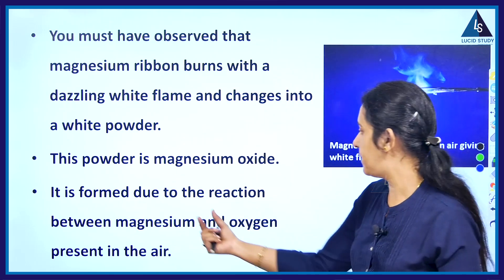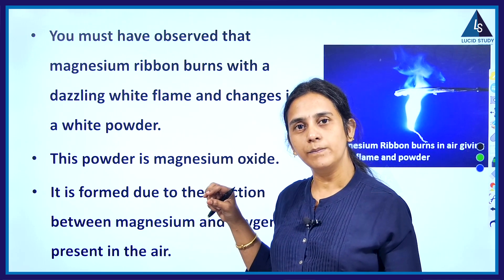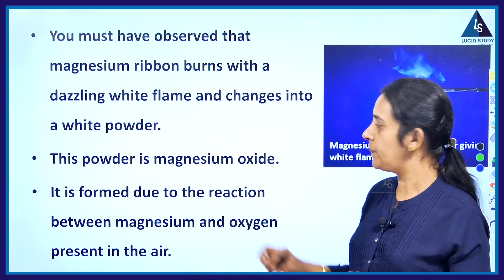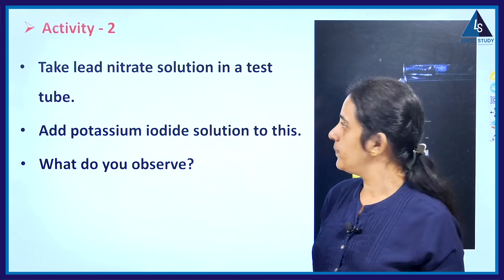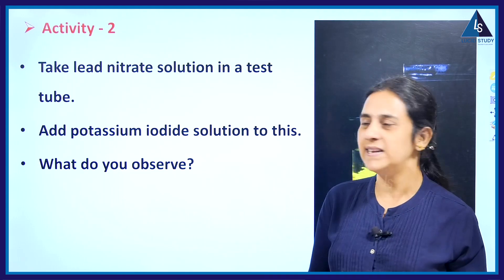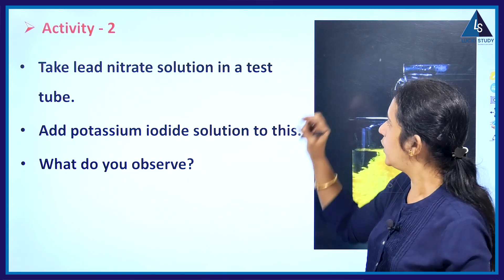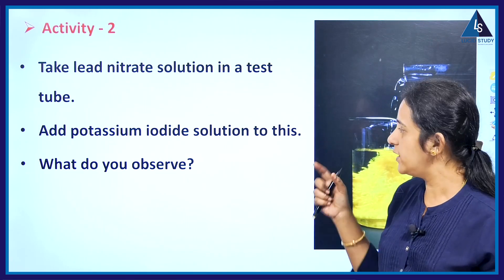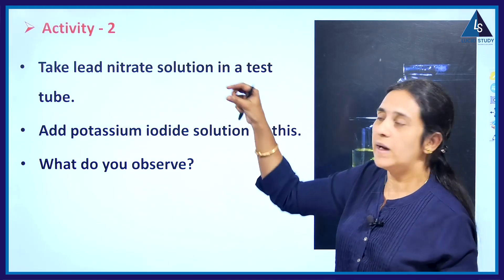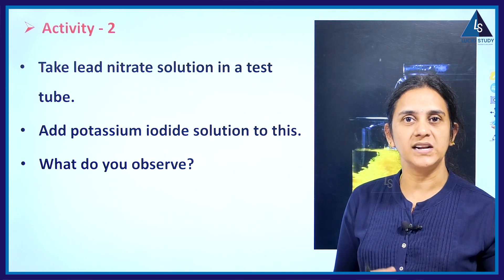Magnesium oxide is formed due to the reaction between magnesium and the oxygen present in air. In Activity 2, take lead nitrate solution in a test tube and add potassium iodide (KI) to it. You will observe a yellowish color appear, indicating that a chemical reaction is taking place.